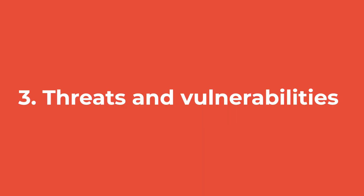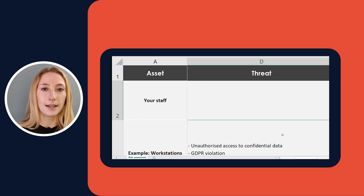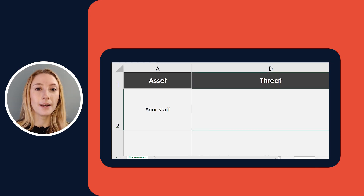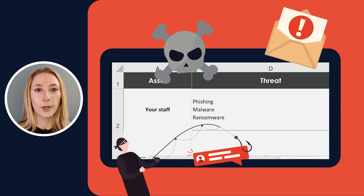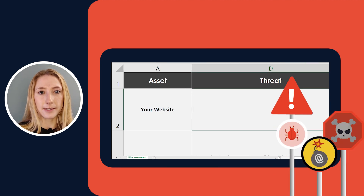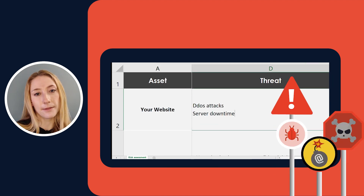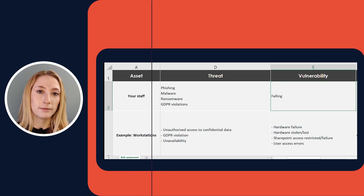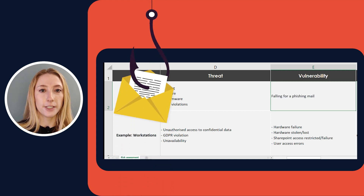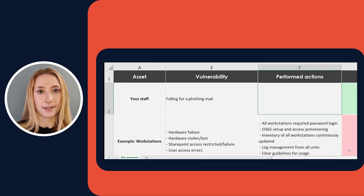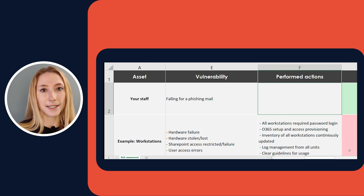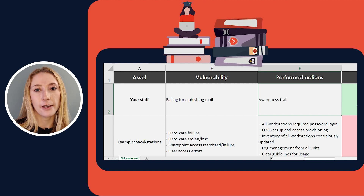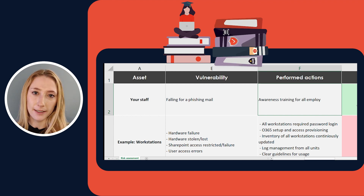Now let's move on to step three, where you list the threats and vulnerabilities of each of your assets. In the threat column, you describe any potential threats to an asset that could affect your organization. When it comes to your staff, threats could be phishing, malware, ransomware, or GDPR violations. Talking about your website, threats could be DDoS attacks, server downtime, or something else. In the vulnerability column, you describe why a threat might happen — for example, the vulnerability could be falling for a phishing email. In the performed actions column, you write what you're already doing to mitigate these risks, such as phishing training and awareness training.